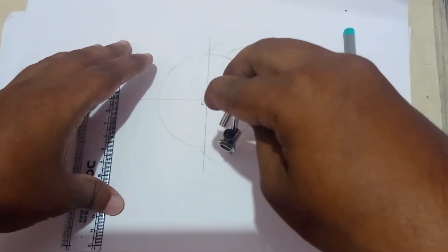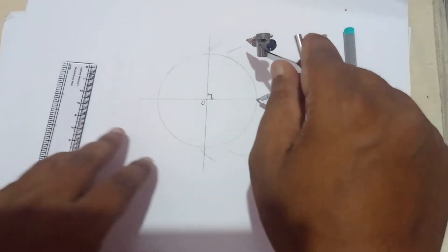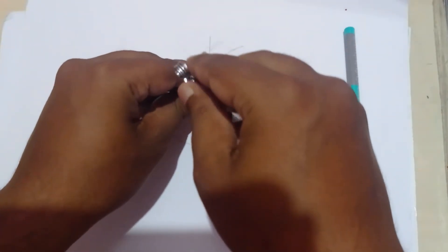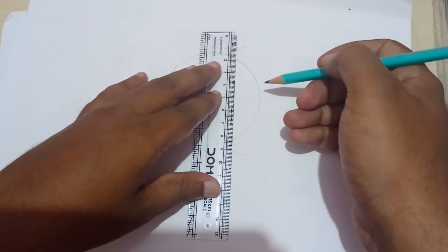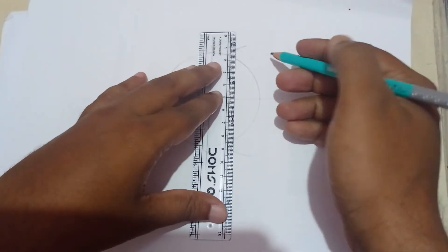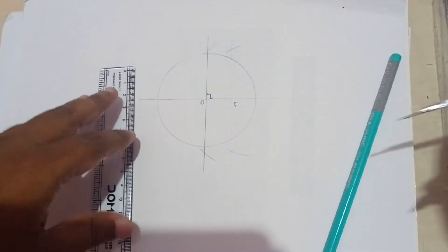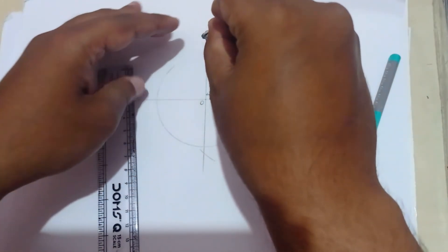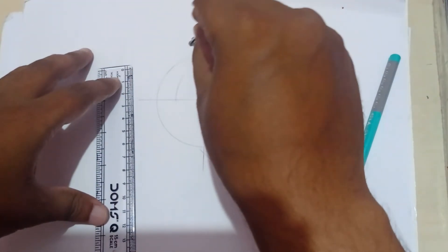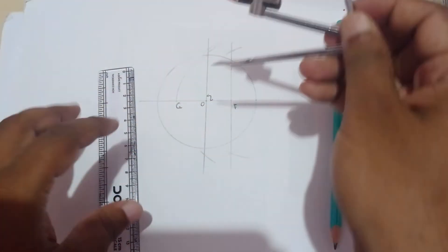After this we have to cut one arc and the second arc here. This one you give as point number F. From here you measure this length and you cut it here. This point is G.